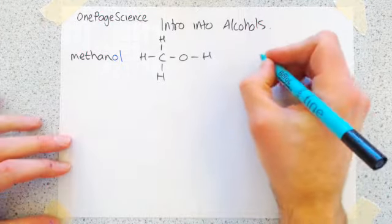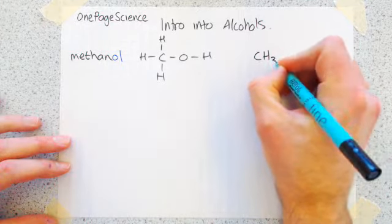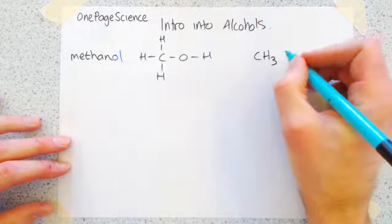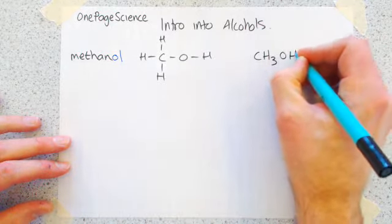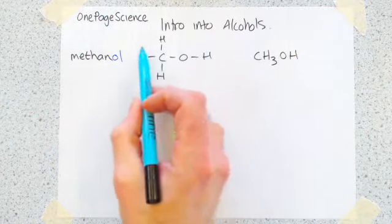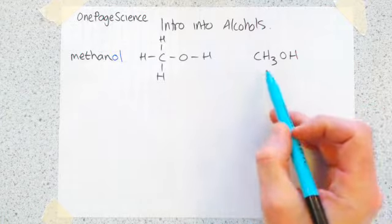There's another way you can draw this, is to write CH3, which represents this part of the molecule, and then OH. So methanol is its name. This is called the full displayed formula. This way is called structural formula.